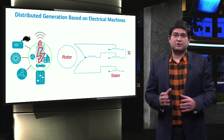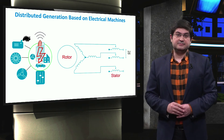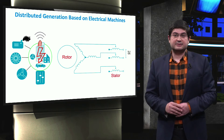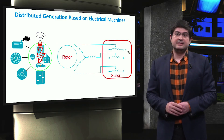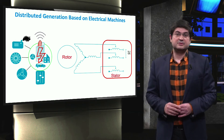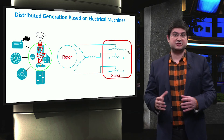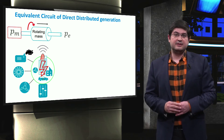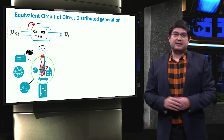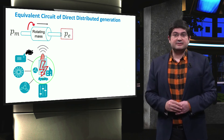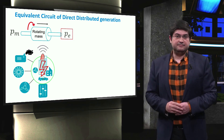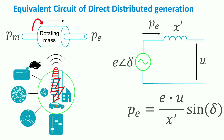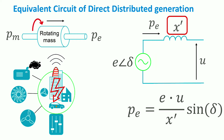Let's now have a look into the structure of the distributed generation based on electrical machines. The electrical machine consists of two main parts, the rotor and the stator. The stator of the machine is directly connected to the grid, through which the electrical power of the machine is exchanged with the three-phase grid. The equivalent electrical circuit can be represented by an AC voltage source with amplitude voltage E and phase angle delta, in series with the transient reactance of the machine.